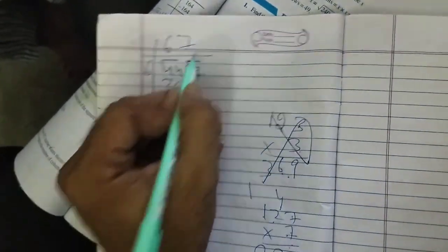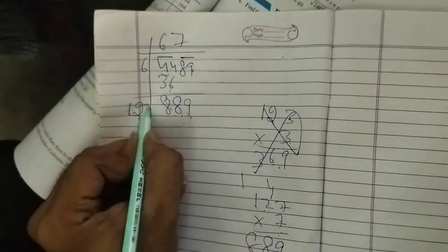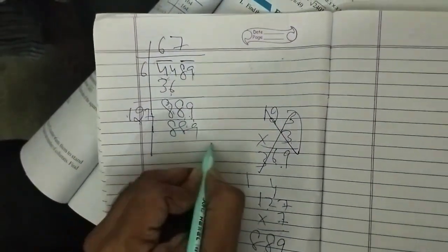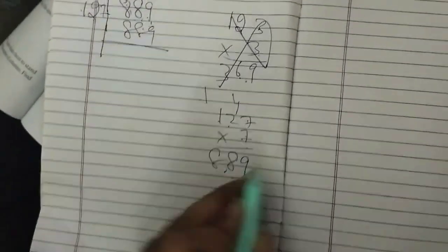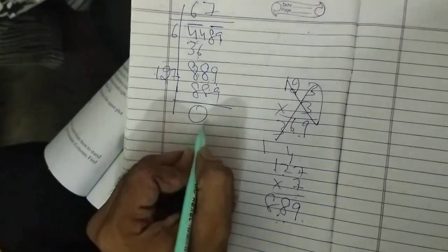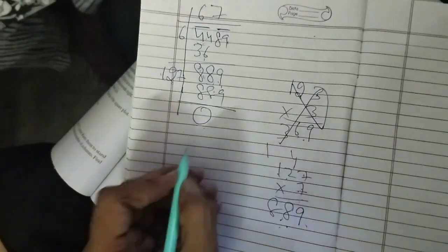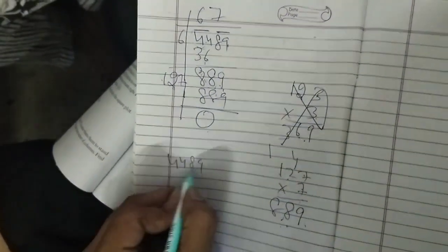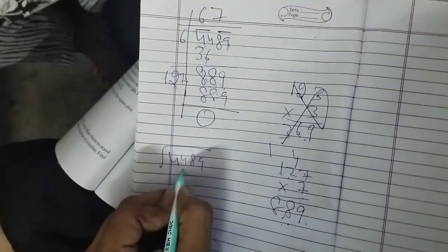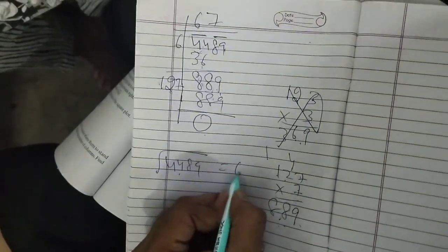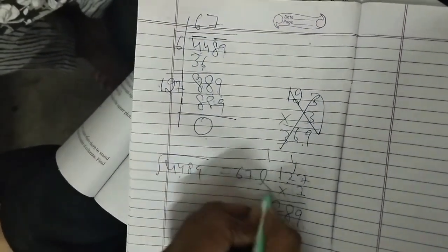Now write the 7. We have 8 and 9 — this is 89. The remainder is 0. So the square root of 4489 is 67.